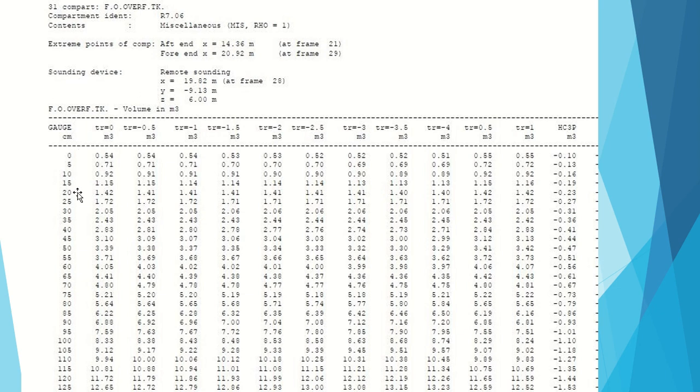We can see the different trims given for that particular ship. We have trim given both in negative and in positive. If we have trimmed to the aft then trim is taken as negative, and if we have trimmed to the bow then trim is taken as positive.